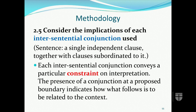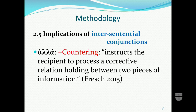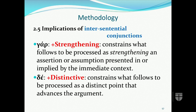Step five: consider the implications of intersentential conjunctions used. Each intersentential conjunction conveys a particular constraint on interpretation, so the presence of a conjunction at a proposed boundary will indicate how what follows is to be related to the context. The following are the constraints associated with some intersentential conjunctions found in Galatians: 'alla' — plus countering — instructs the recipient to process a corrective relation between two pieces of information. 'Gar' — plus strengthening — constrains the reader to process the material as strengthening an assertion, offering offline information from Longacre's standpoint, though it doesn't mean it's unimportant.